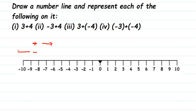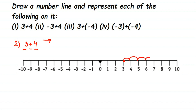If you're adding a negative number, you go towards the left side of the number line. The first question is 3 + 4. Both numbers are positive, so I'm going to start from three, locate it on the number line, and since four is positive, move four units to the right — one, two, three, four — stopping at seven. So three plus four is seven.